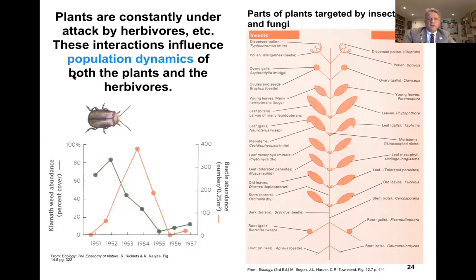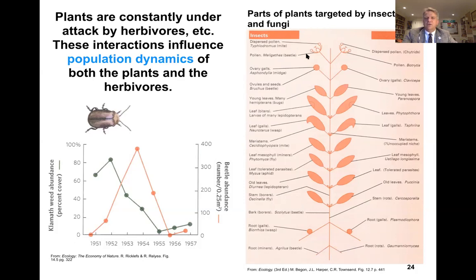One factoid I would love for you to take away from Bio104 is this idea of the constant attack that plants are under. All of these wonderful secondary compounds that plants produce — plants are the ultimate biochemical engineers of the living world — are being produced to fight off this constant attack. This diagram shows a plant from roots up to flowers and fruit, illustrating the different parts of the plant and the types of attacks they constantly face, and the insects typically utilizing those resources.